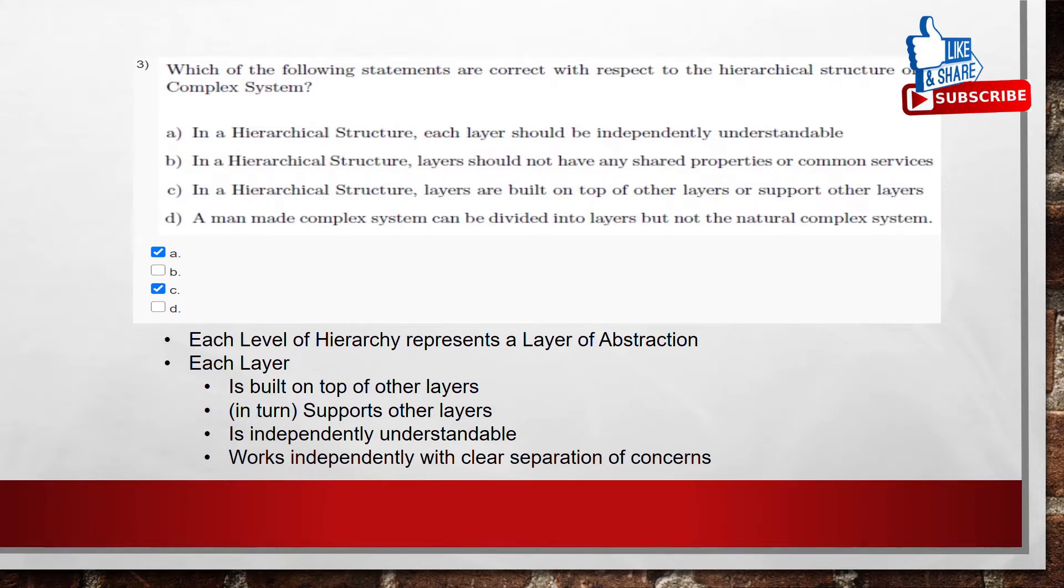A man-made complex system can be divided into layers but not the natural complex system. As we know that, each level of hierarchy represents a layer of abstraction. Each layer is built on the top of the other layers, supports other layers, is independently understandable, works independently with the clear separation of concerns. And coming to the options, the options A and C are the correct options.